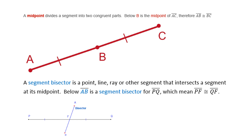A midpoint divides a segment into two congruent parts. Point B is the midpoint of segment AC, so segment AB is congruent to segment BC — notice the tick marks that indicate that. A segment bisector is a point, line, ray, or other segment that intersects a segment at its midpoint. AB is a bisector — it bisects segment PQ. Since it cuts PQ in half, PF is congruent to FQ.